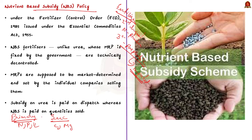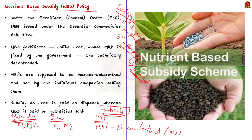Regarding fertilizer subsidy: no fertilizer subsidy was paid until 1977. The oil crisis of 1973 led to an increase in fertilizer prices, causing a decline in consumption and an increase in food prices. In 1977, the government subsidized manufacturers. After the 1991 crisis, the government decontrolled imports of phosphate and potash fertilizers, but urea imports remain restricted. Urea fertilizer — a nitrogen-based fertilizer — is the only fertilizer whose price is regulated by the government, provided to farmers at the statutorily notified price.